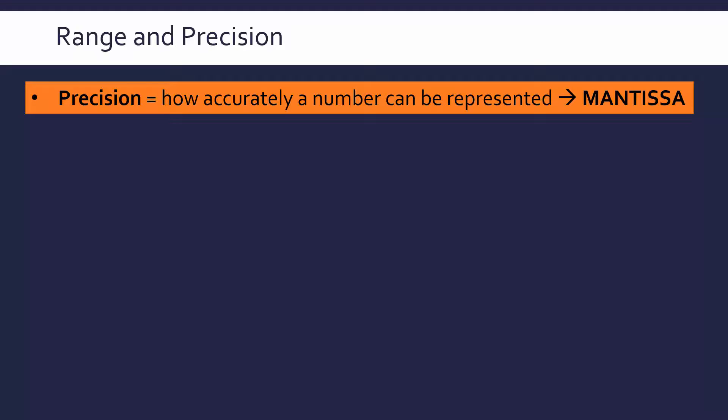And in floating point, precision is really determined by the size of our mantissa. If we've got a small mantissa, we can't represent a really, really small number or really, really big number. And so we want to ideally have a bigger mantissa to increase our precision.